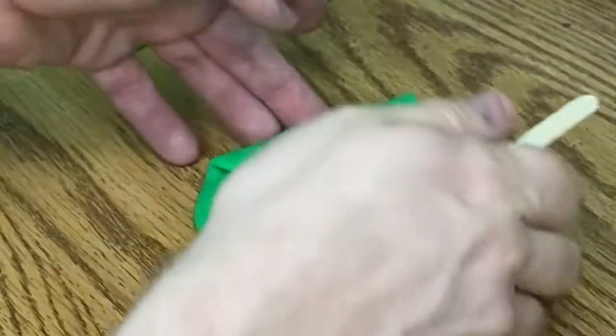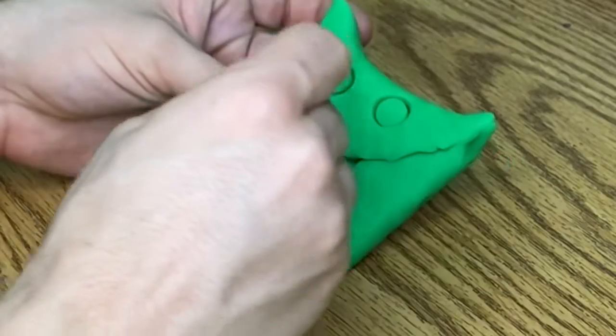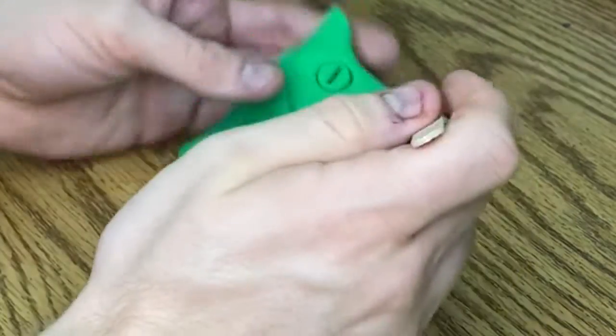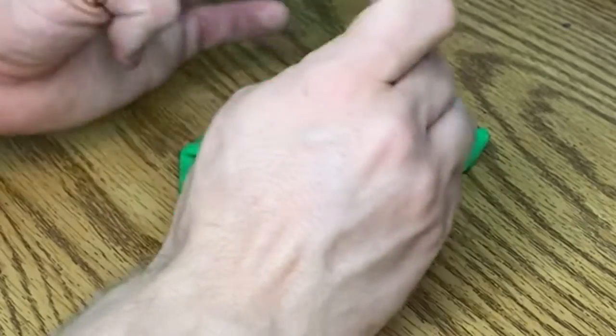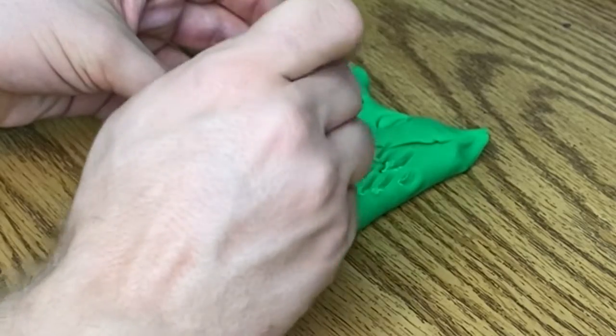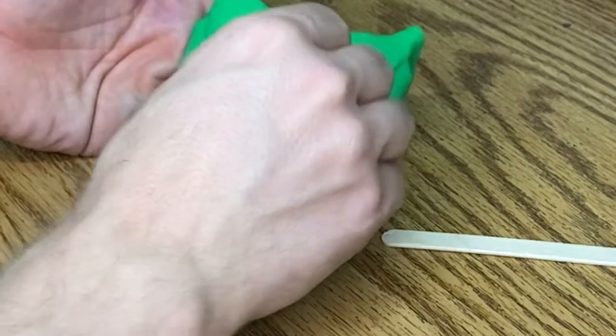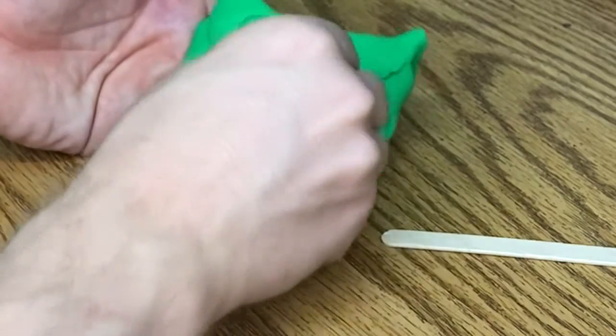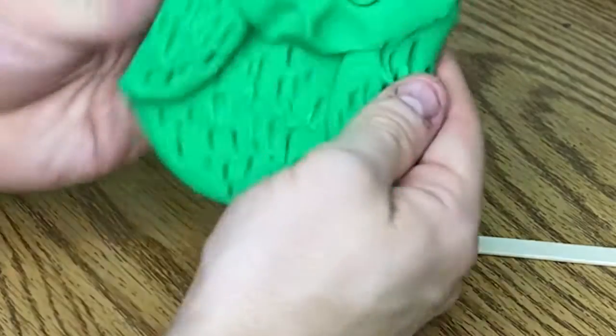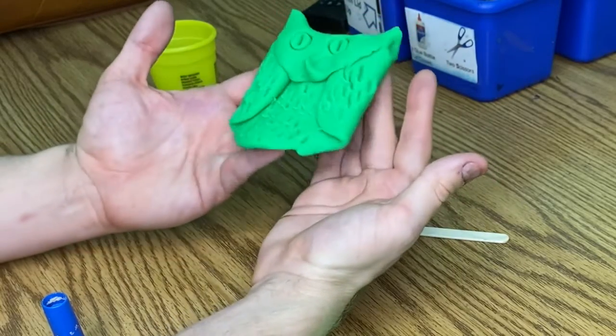All right. Now you can use your popsicle stick to add some texture. I can put a little line in between the eyes. Ooh, how scary. Maybe I can use this to make the texture of feathers all over his body. Or her body. Maybe I can pinch and give him a little beak. Go ahead and make your owl, and then give us a thumbs up.